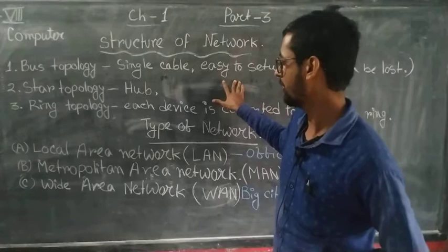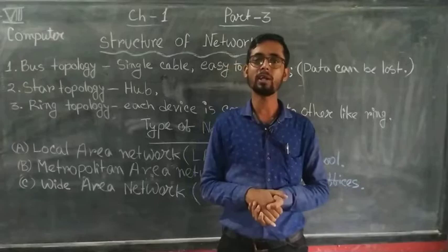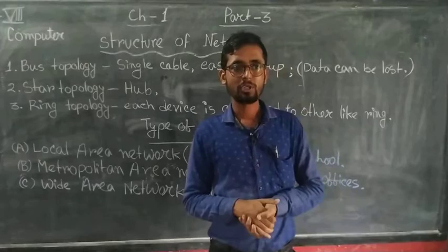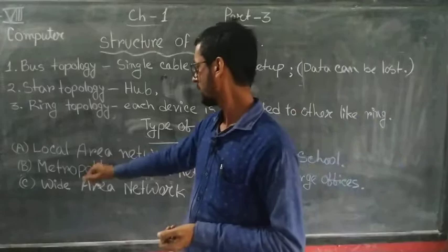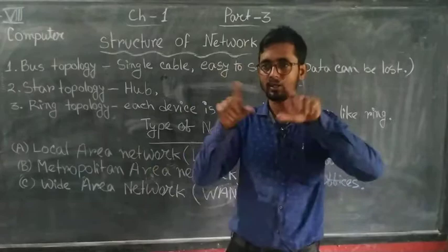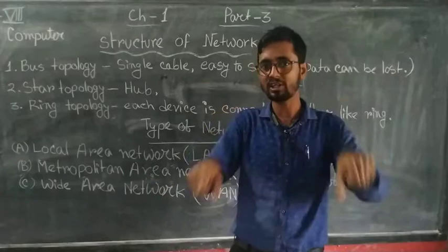Now let us come to the types of network. We already know that networks are used in places like mobile network systems or cable TV networks. The first type is Local Area Network, or LAN. In a LAN, all computers within one building are connected through a network. It is very small in size and can be used in a school or any office.